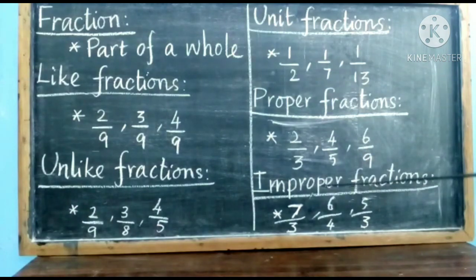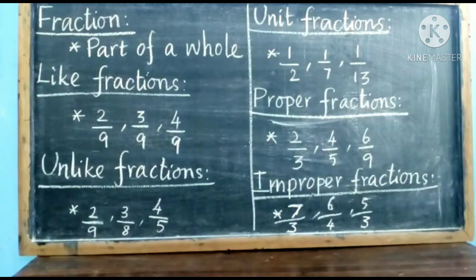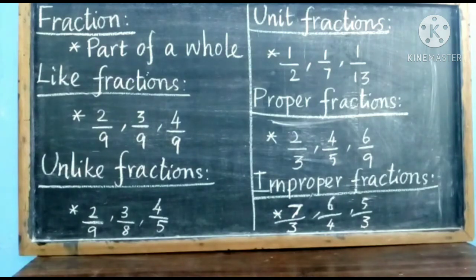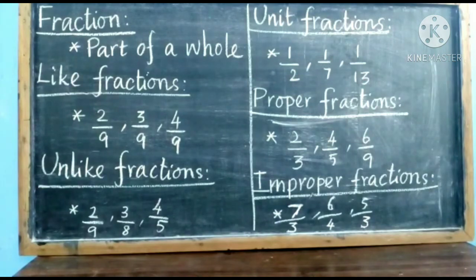Obviously, what will be the definition for improper fractions? The numerator should be greater. Look at the first fraction 7 by 3 — the numerator 7 is bigger than 3, so it is an improper fraction. All types of fractions are very important, but you will be using proper fractions and improper fractions most often.